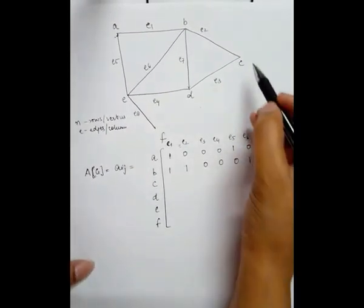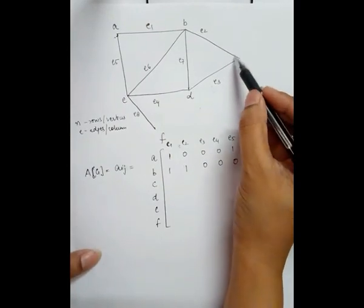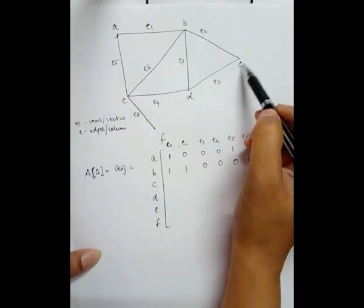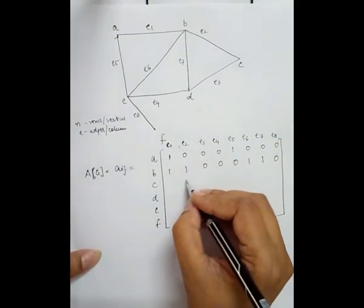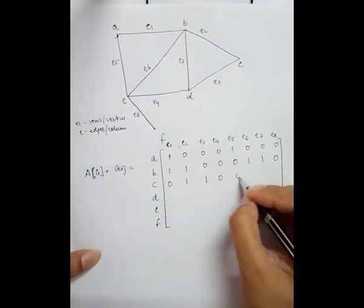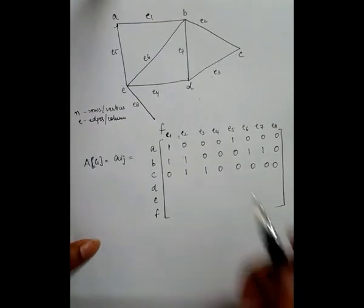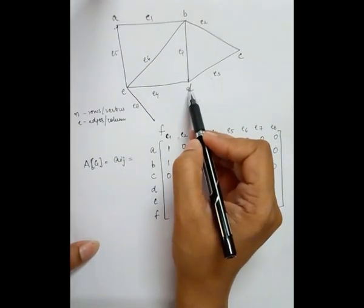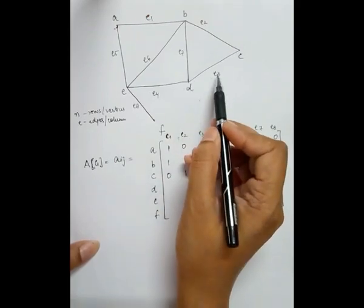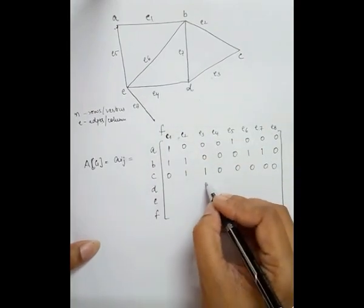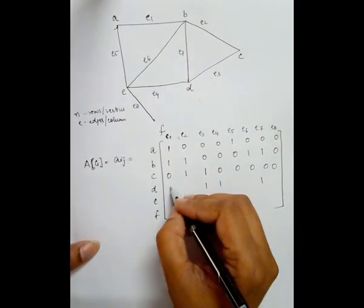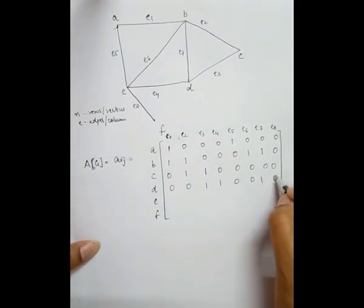On vertex c, the degree of vertex c is two, meaning there are two edges incident on c: e2 and e3. Therefore the values of e2 and e3 are one and the remaining values are zero. On vertex d, the degree is three, meaning three edges are incident: e3, e4, and e7. Therefore e3, e4, and e7 have value one and the rest are zero.